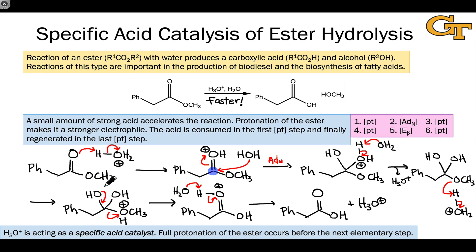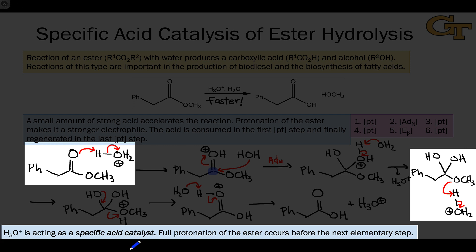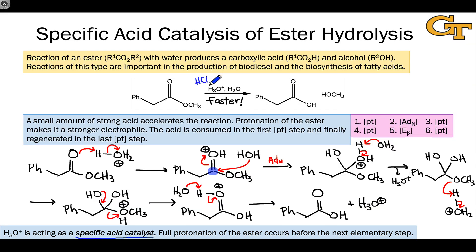The second thing to note is step one and step four, where complete or full proton transfer events take place — full-blown intermediates containing positive charge are formed. Complete proton transfer to the electrophile is referred to as specific acid catalysis. H3O⁺ is called a specific acid catalyst because it is the specific acid doing this proton transfer. It doesn't matter if we use HCl, H2SO4, or HI — the acidic reagent we use doesn't affect the kinetics, because the specific acid actually doing the proton transfer in this mechanism is H3O⁺. That's why it's called specific acid catalysis. In the next video, we're going to contrast this with general acid catalysis.